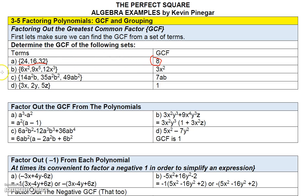So 8 is the greatest common factor. When variables are involved, you have to consider both the coefficients and the variables. Here the coefficients are 6, 9, and 12, and the largest factor that divides into all three is 3. We also need to find the largest power of x that divides into x², x⁵, and x³, which is x² — since you can't divide x³ into x². So the greatest common factor is 3x².